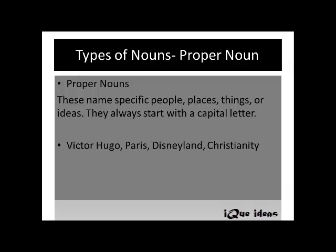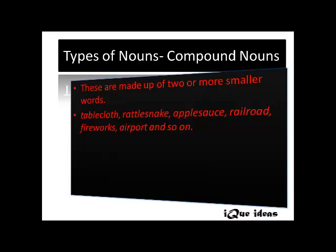The next type is proper noun. Proper nouns name specific people, places, things, or ideas. They always start with a capital letter irrespective of their position in a sentence. Examples are Victor Hugo, Paris, Disneyland, and Christianity.